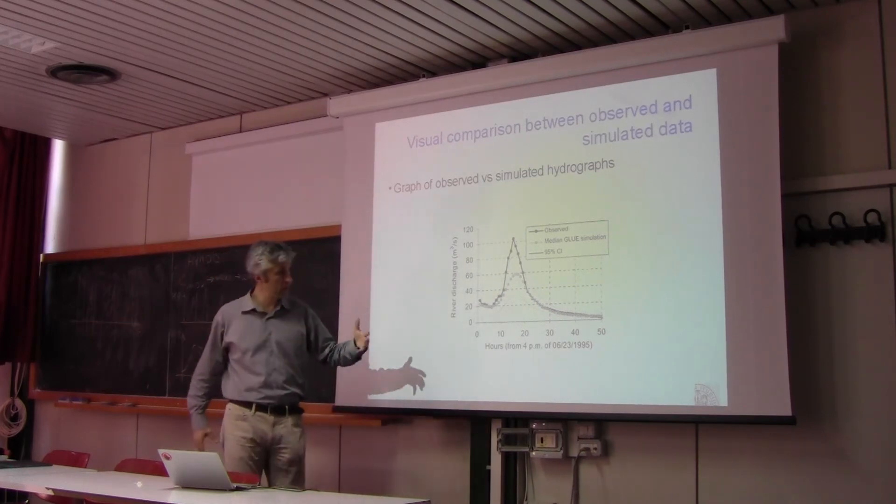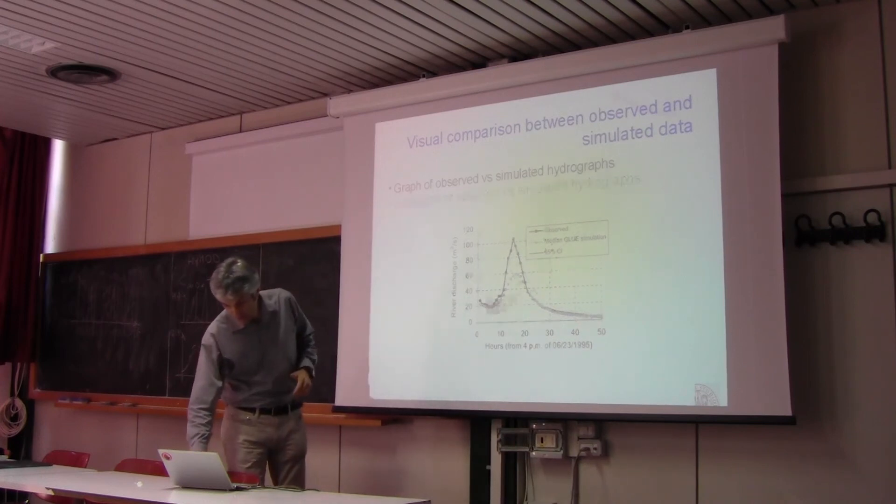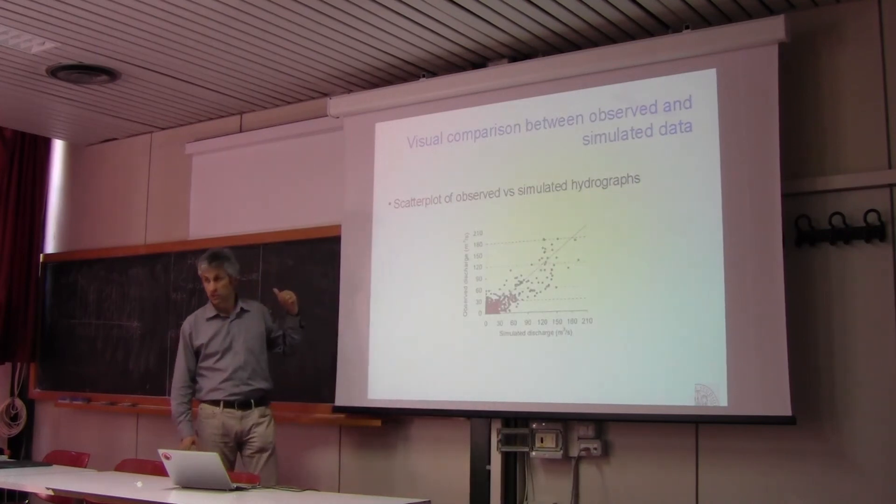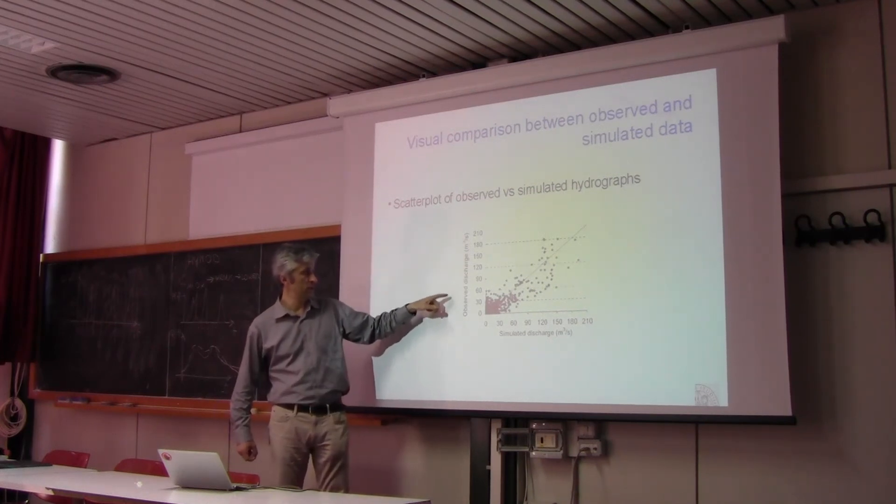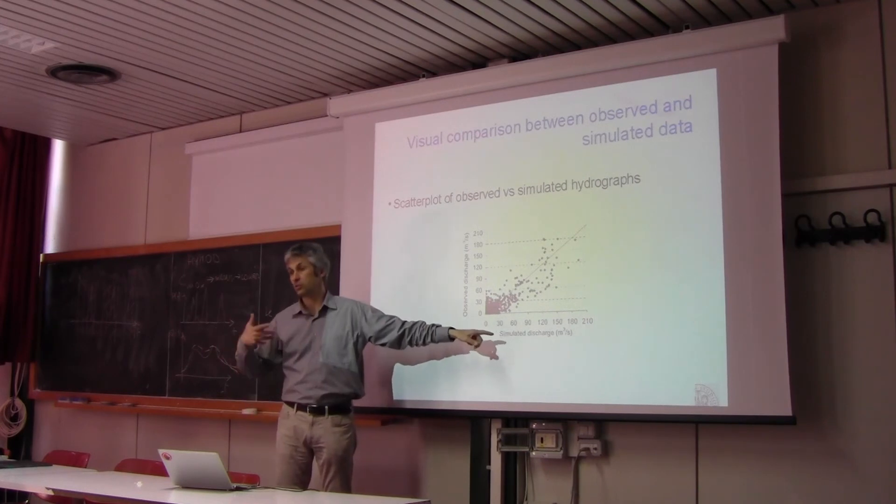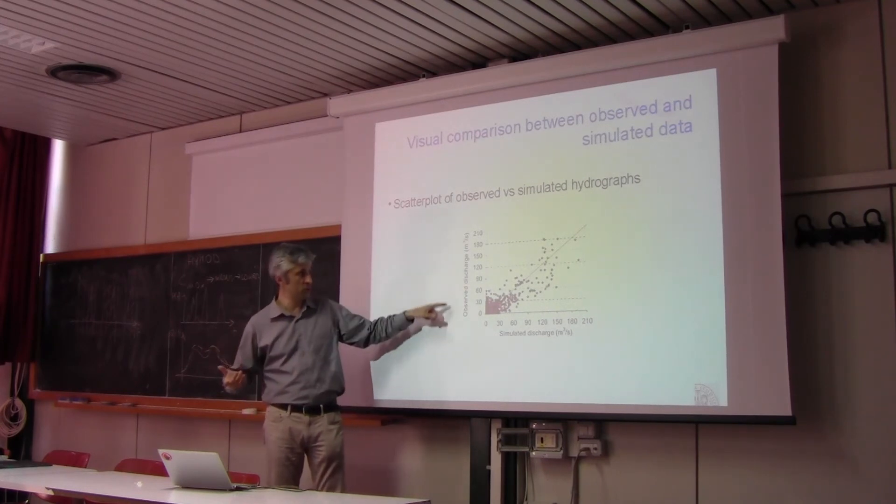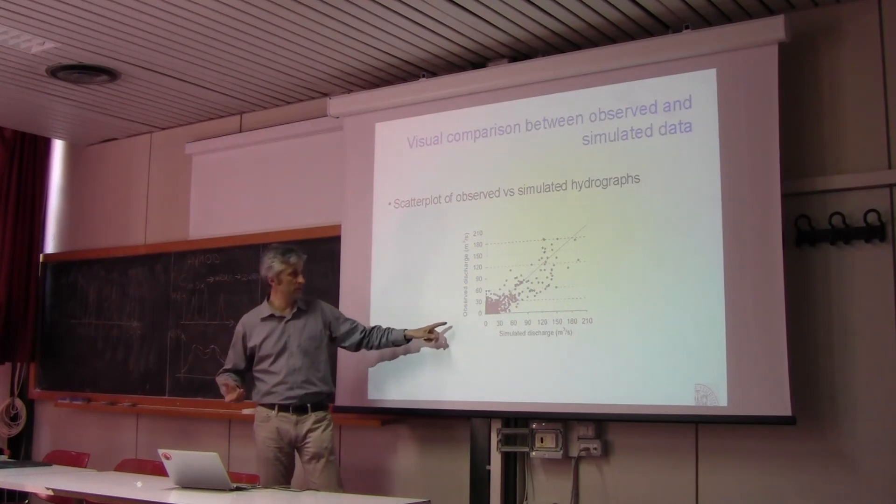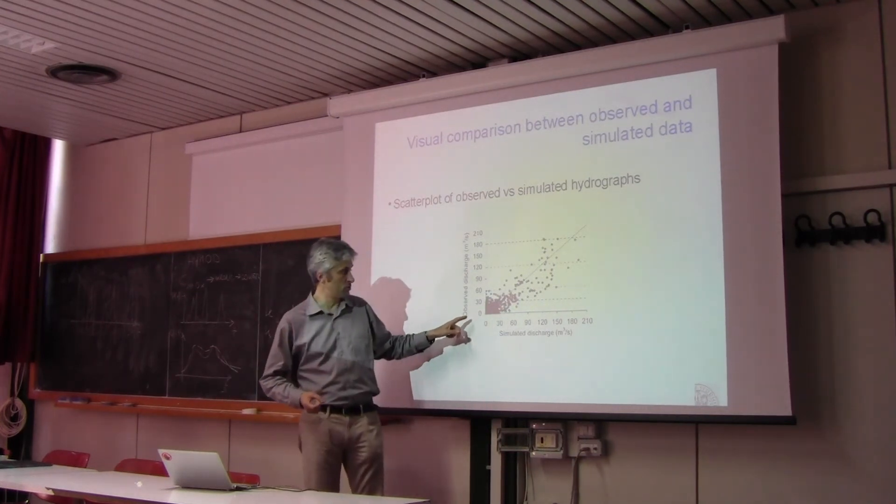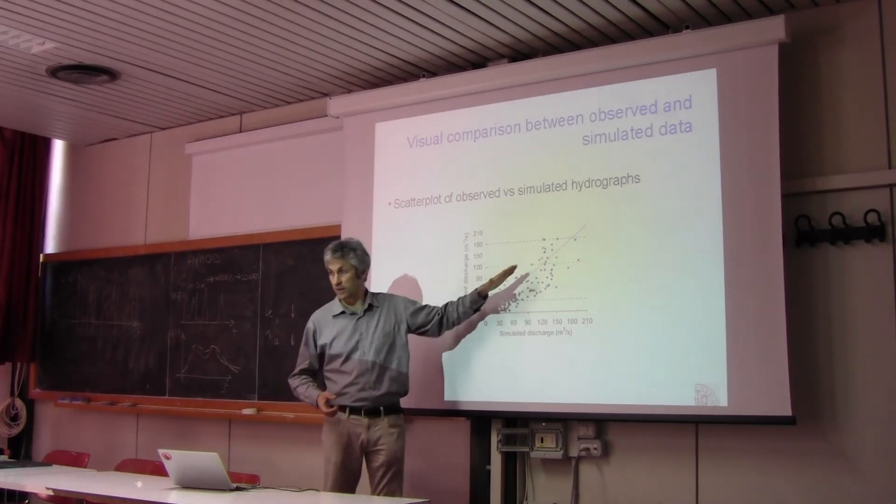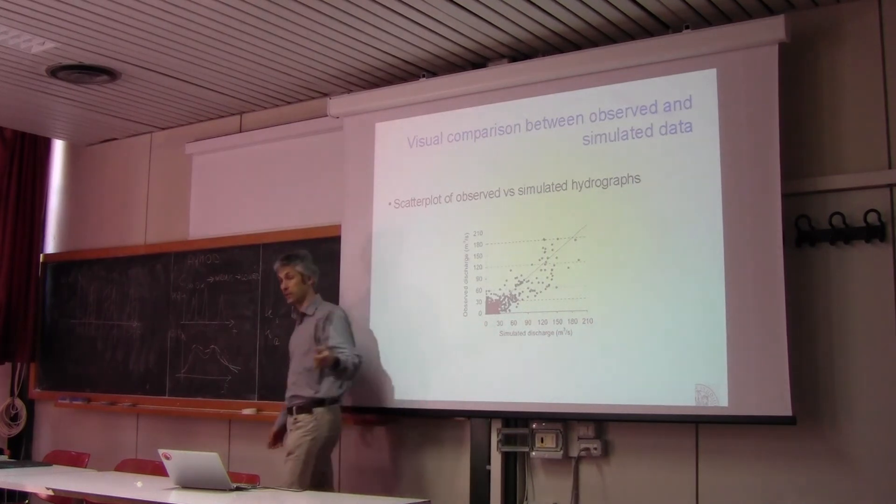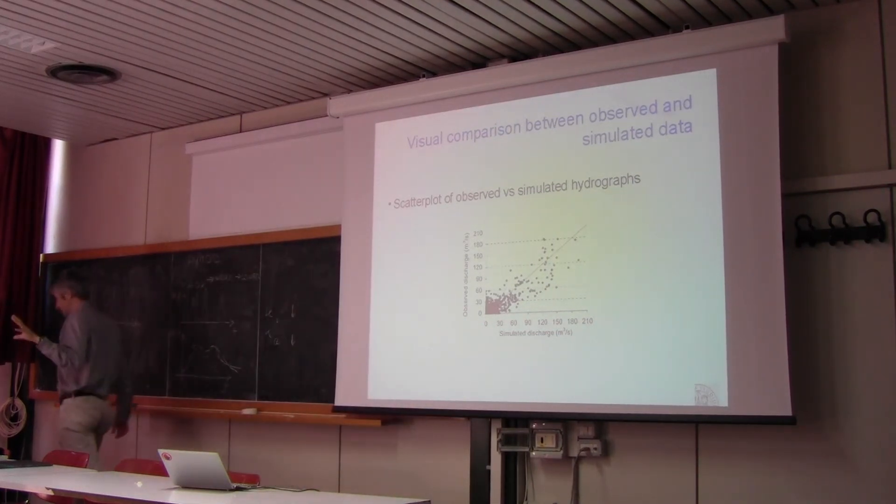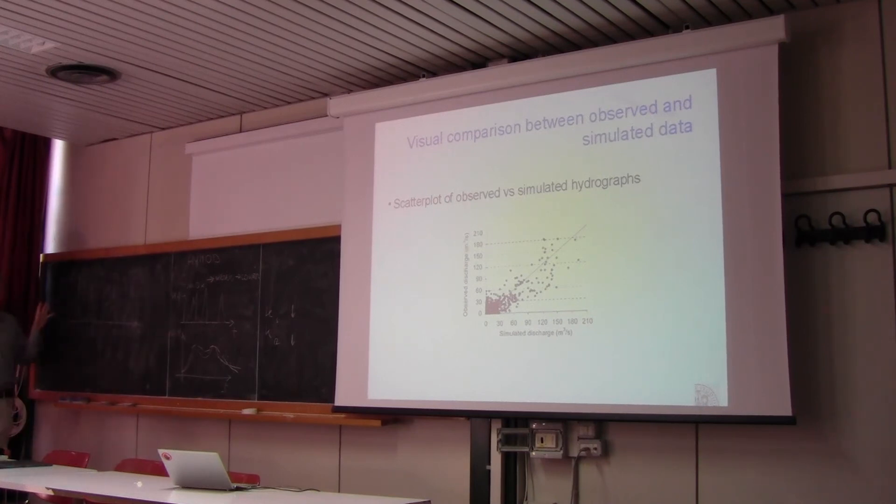And then usually we require more detailed graphs and a graph that is frequently used. I mentioned it before is a visual inspection of the simulated discharge in this case river flow versus the observed one. I already told you that ideally the perfect model would display points along the one-one line and by looking at the scatter of the points around the one-one line you get a very quick visual inspection of model performances. And this is a graph that is frequently used.